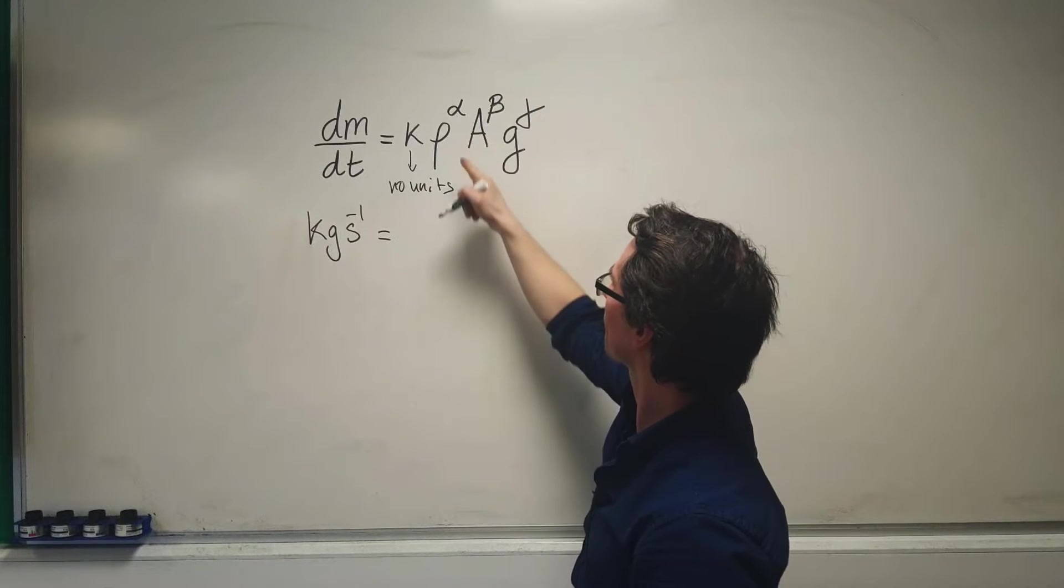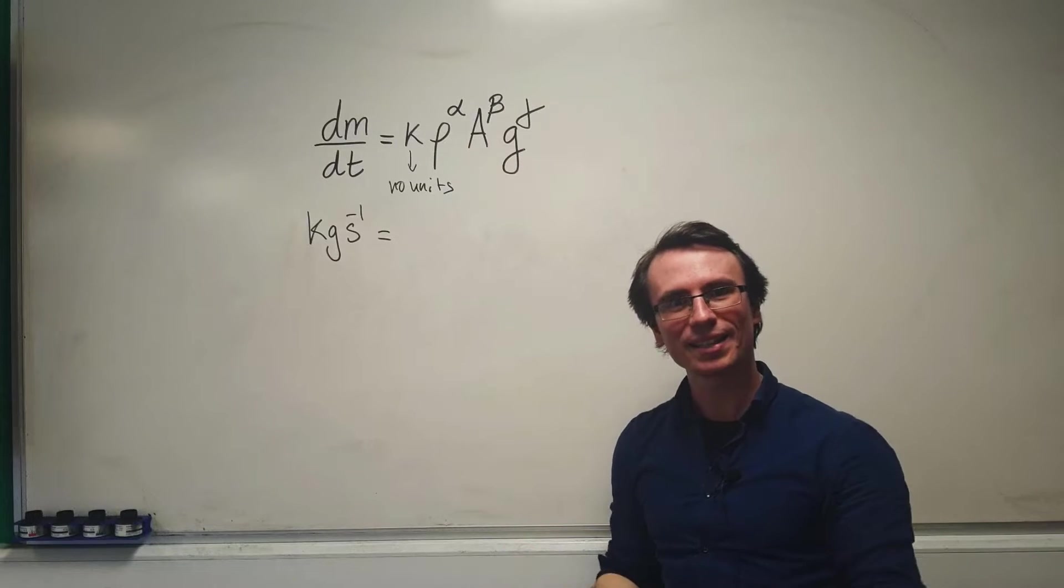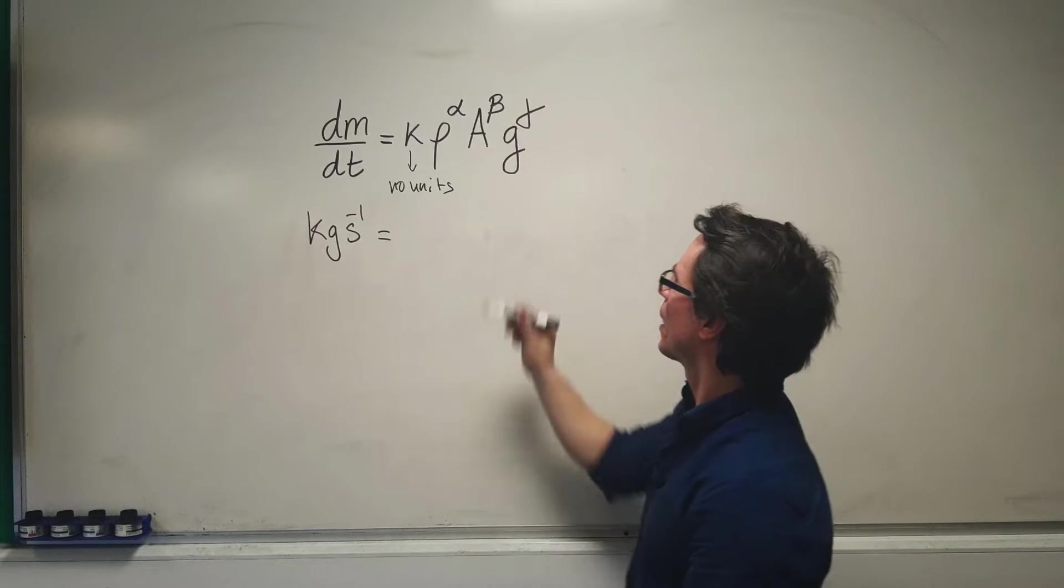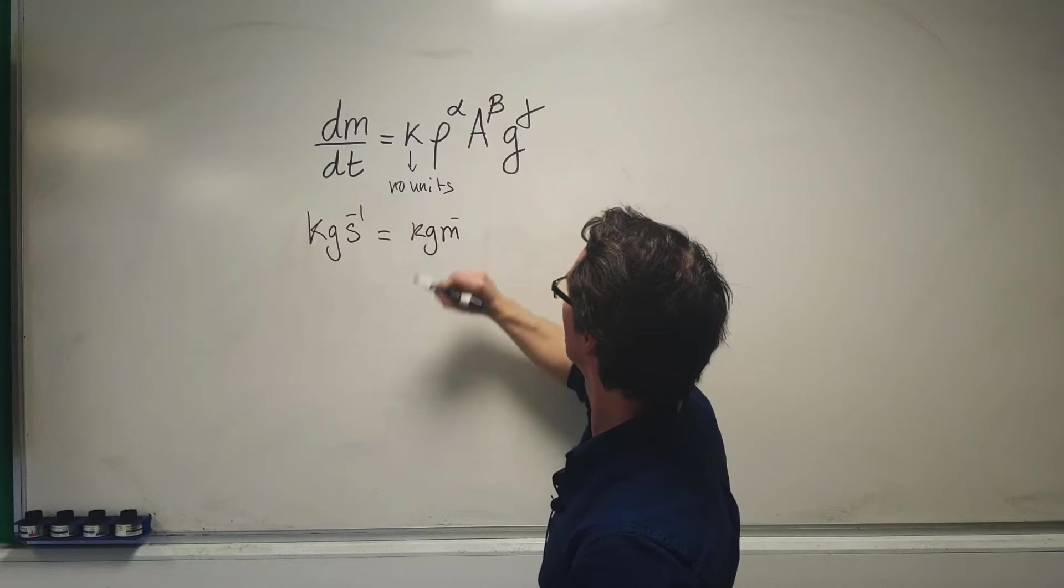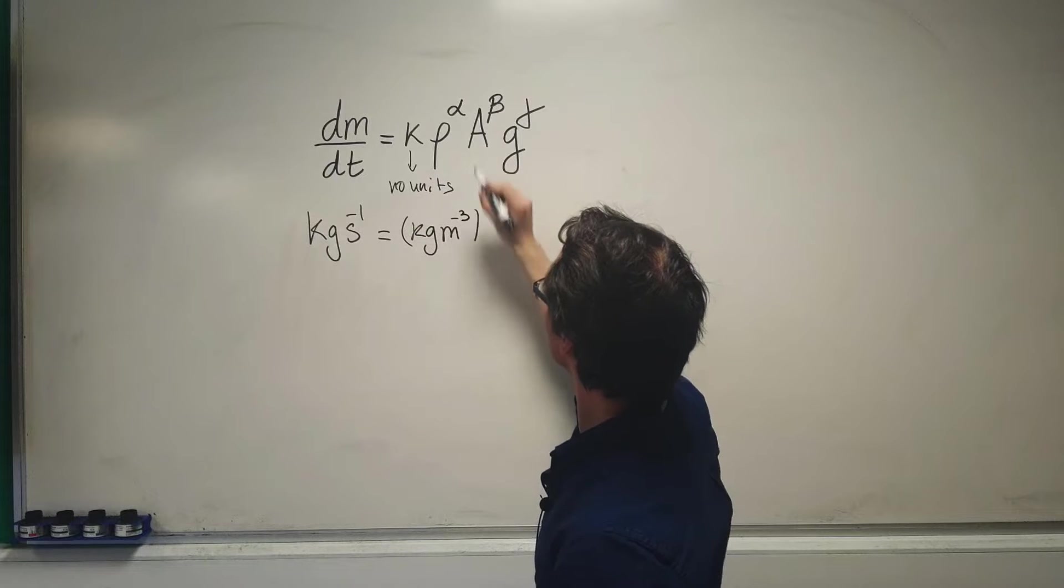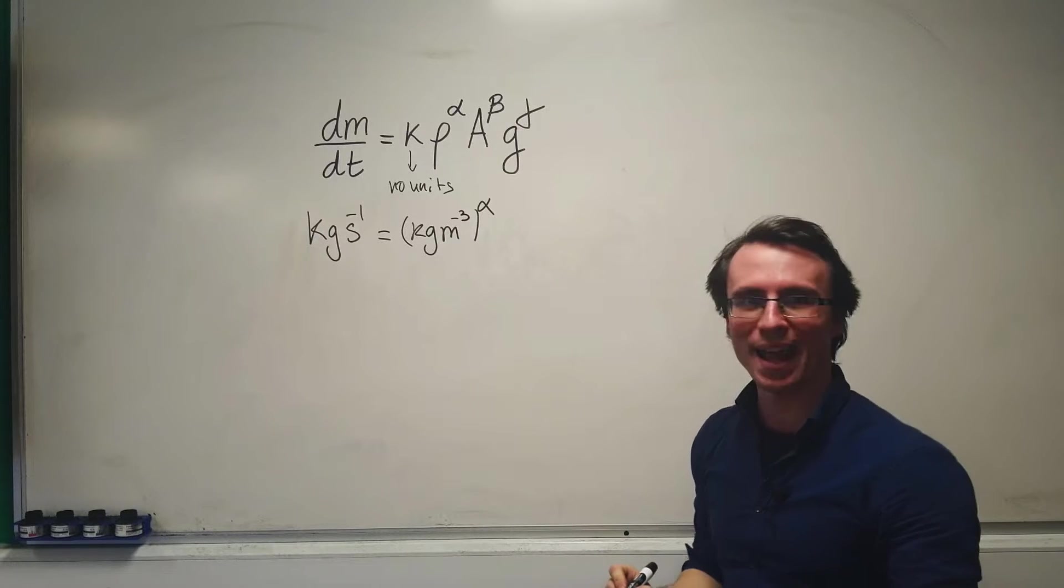This equals ρ, our standard density. The units of density are kg·m^(-3), raised to the power of alpha.